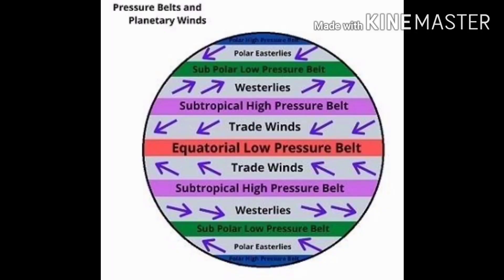Global pressure belts and planetary winds are illustrated in this figure. Trade winds blow from subtropical high pressure belts in both the northern and southern hemispheres to the equatorial low pressure belt. Westerlies blow from subtropical high pressure belts in both hemispheres to subpolar low pressure belts. Polar easterlies blow from polar high pressure belts in the north and south to the subpolar low pressure belt.